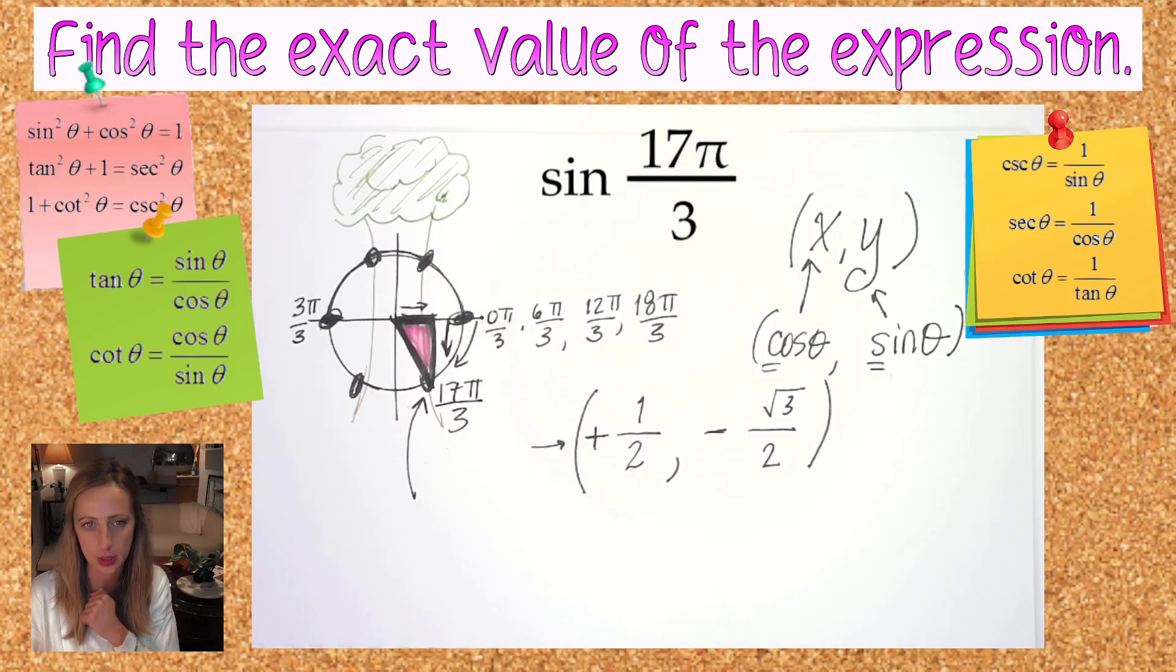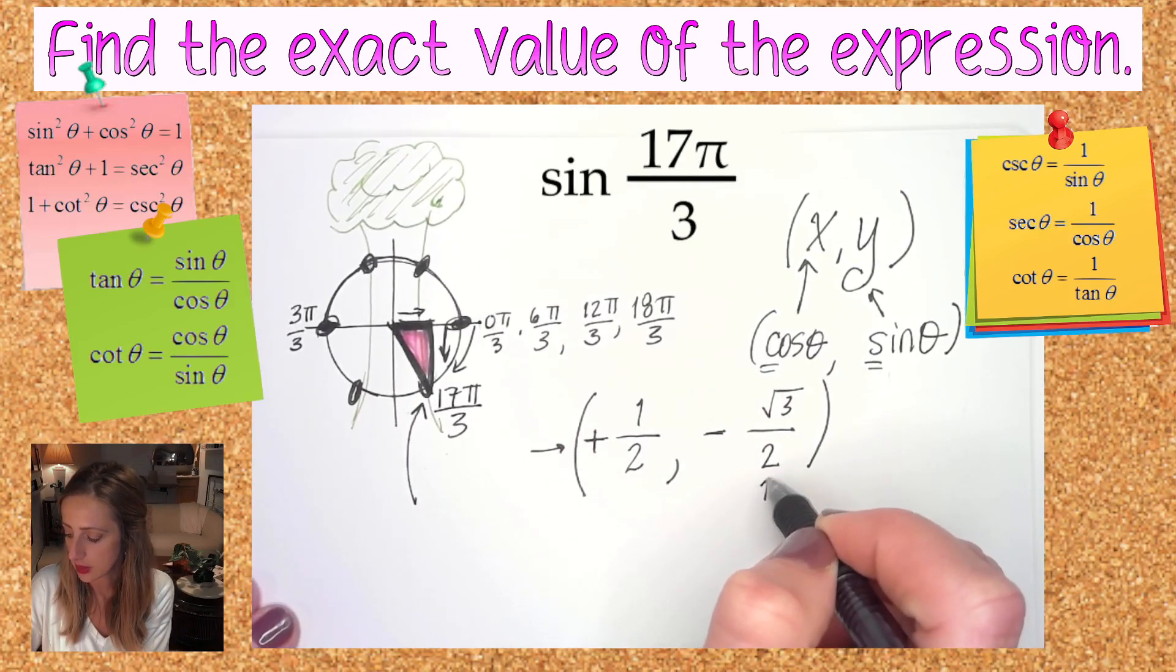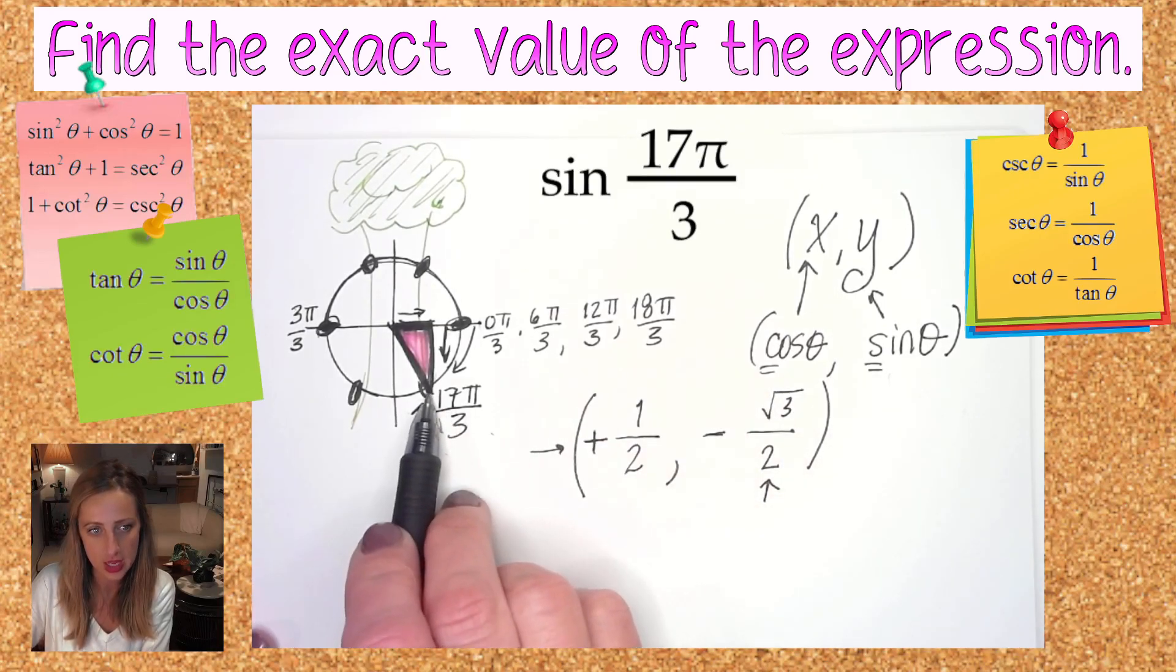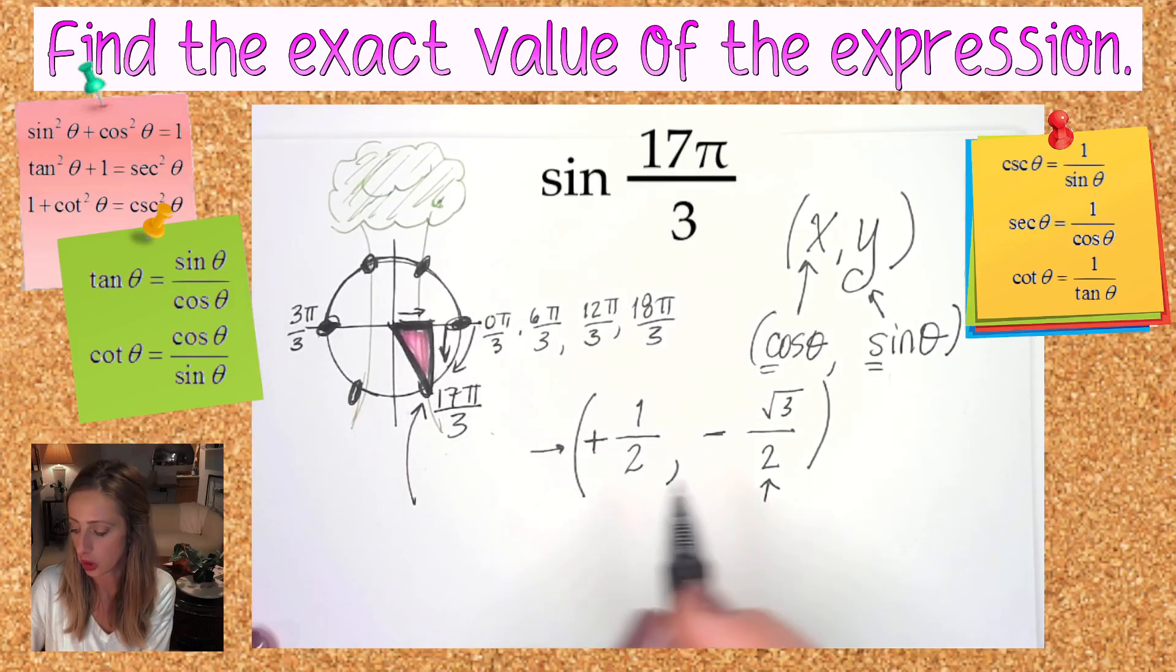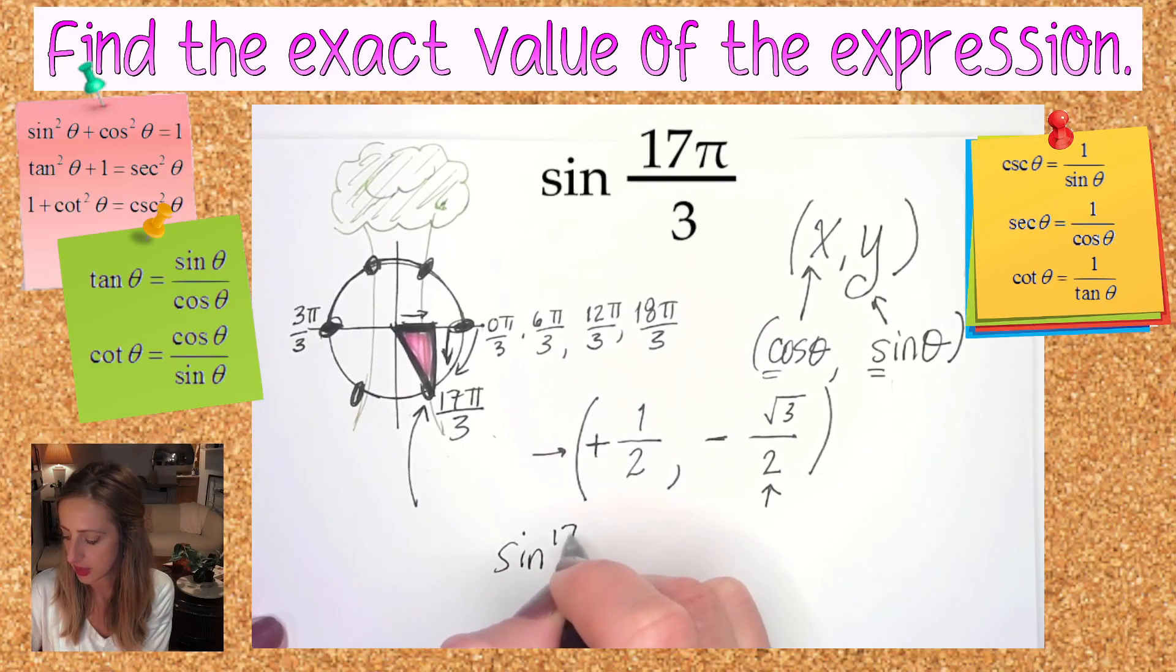So the ordered pair of the point corresponding to where that terminal side slices the unit circle is one half comma negative root three over two. Since sine is the y value of the ordered pair where the terminal side of an angle cuts through the unit circle, our final answer is sine of 17π over 3 equals negative square root of three over two.